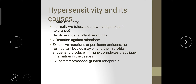The second cause is reaction against microbes. Excessive reaction or persistent antigen forms antibodies that may bind to the microbial antigen to produce immune complexes that trigger inflammation in the tissue. Examples include glomerulonephritis and post-streptococcal disease.